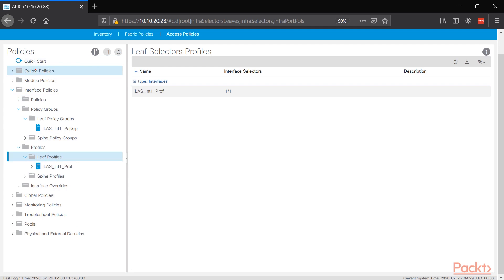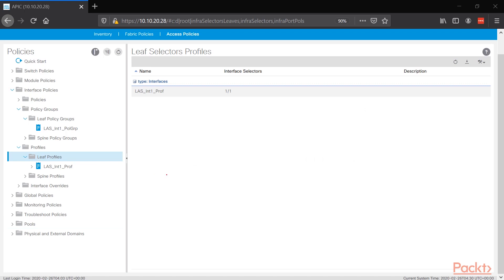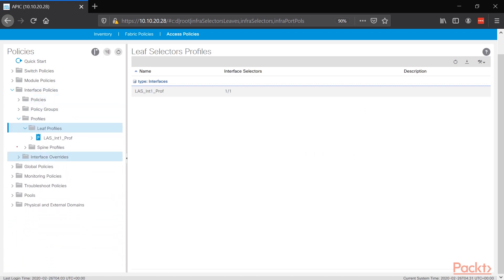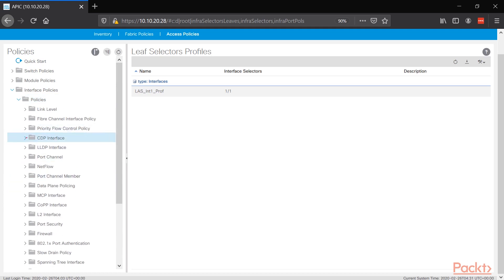Now let's quickly do the port channel — the second one. This is a regular port channel, not a VPC. We're going to add ports 1 and 2 onto the port channel attached only on leaf one. The type is basically the same: port channel, LACP, CDP. And since I already built those policy objects, I can reuse them — I don't need to rebuild them. That's a good thing about ACI.